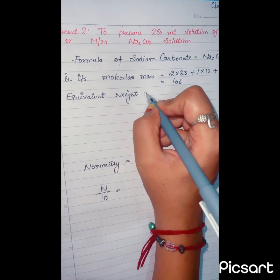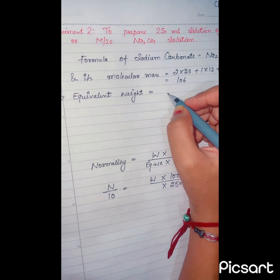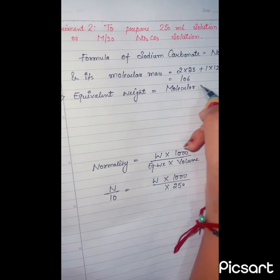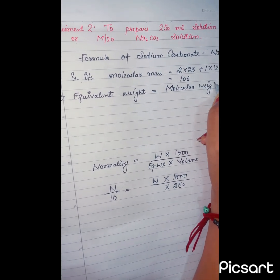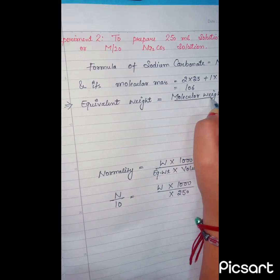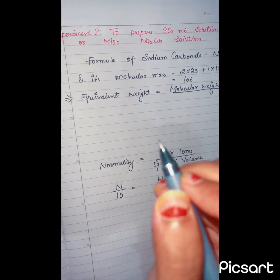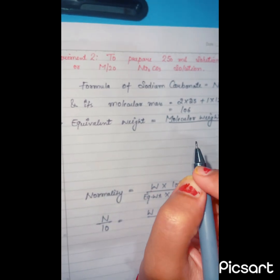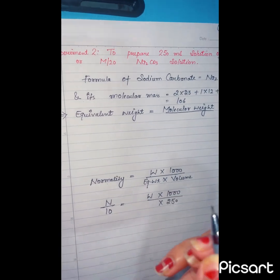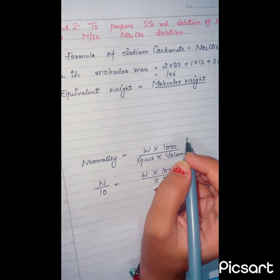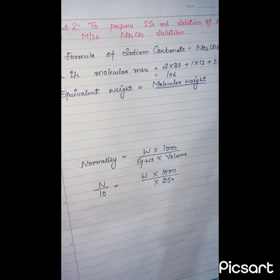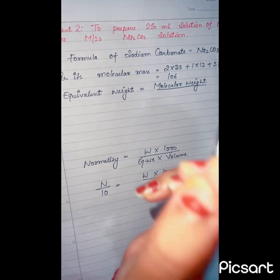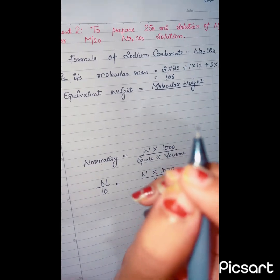Now we find equivalent weight first. Equivalent weight formula is molecular weight divided by valency. If the charges are present in the compound, you have to take the number of loss of electrons. If there are no charges, you can take the metal part.